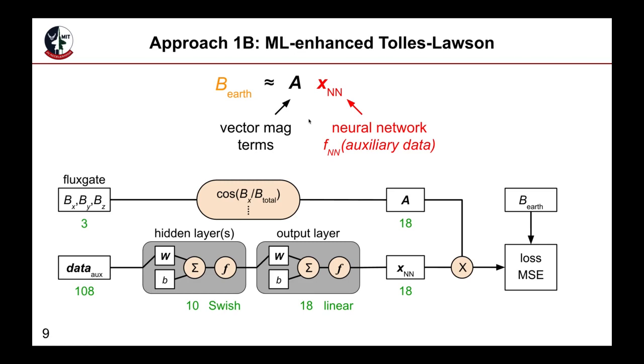The other neural network-based calibration model resembles the Tolles-Lawson model, in that the A matrix is directly used. But here, the X neural network term, which is similar to the Tolles-Lawson coefficients, varies with the data. So it's not a single set of coefficients, it's a varying set of coefficients.